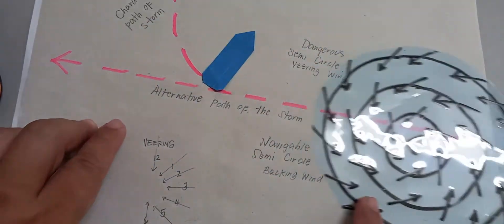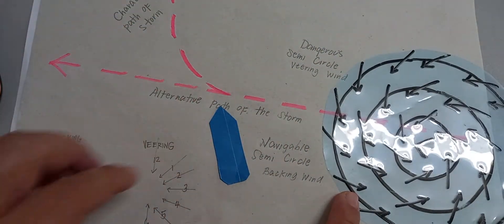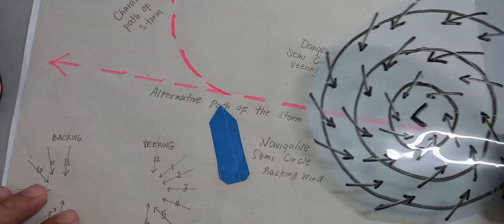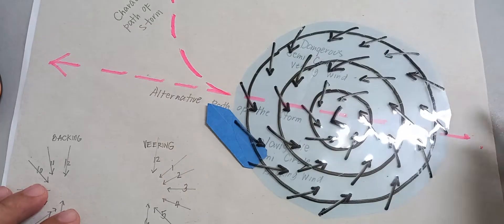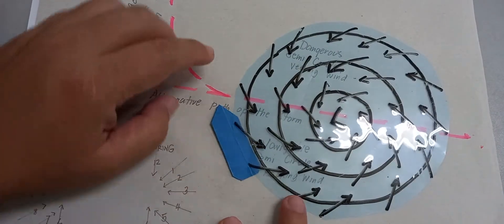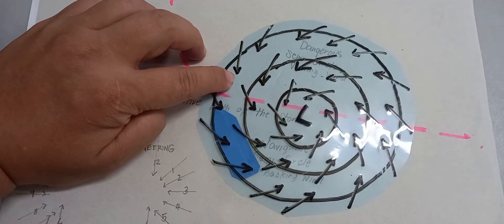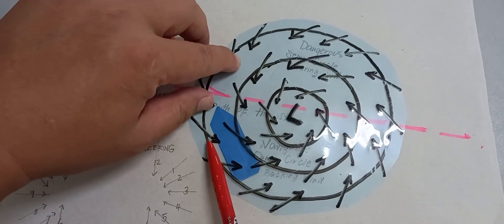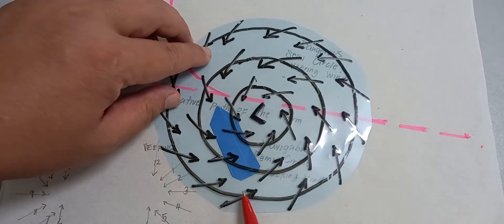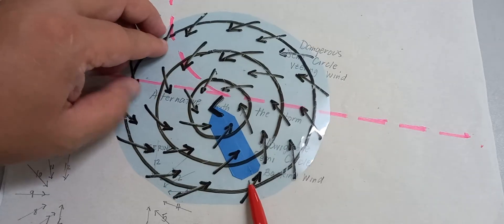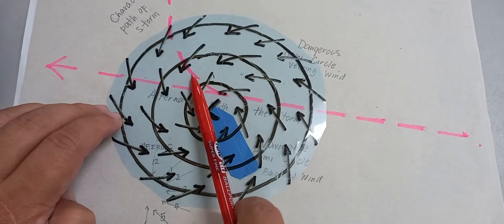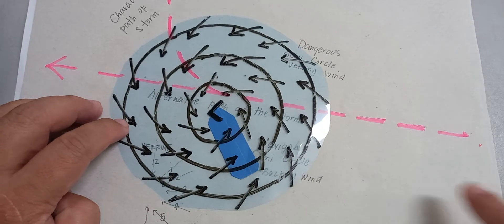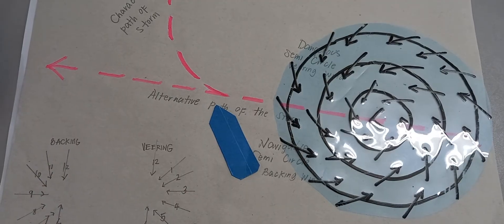And if you observe that the wind is backing as the low pressure area approaches, you will observe the wind coming first from 12 o'clock, then around 10 to 9, then 8, and then until 6 o'clock. Therefore, the wind is changing counterclockwise — it is stated that the wind is backing.